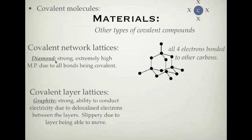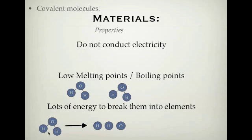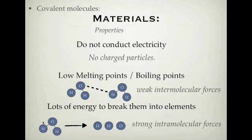In diamond, all four electrons are bonded to other carbons. This means it's an extremely strong material with an extremely high melting point, due to all the bonds being covalent. There are no intermolecular bonds in diamond - they are all intramolecular, where one atom forms a bond with another. If you put massive amounts of energy into diamond, it won't actually melt; it will disintegrate into the elements of carbon, because you're breaking those strong intramolecular bonds.